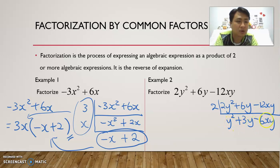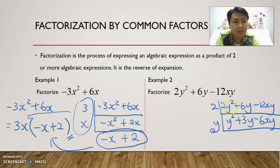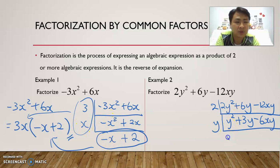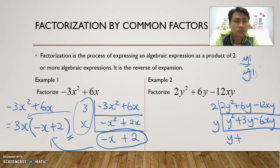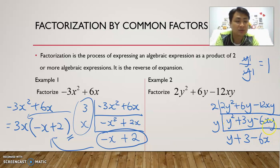We look further — are there any more common factors? We notice there's a y in each term: y squared, 3y, and 6xy. So we continue dividing by y. Y squared divided by y leaves y. 3y divided by y leaves 3. And 6xy divided by y leaves 6x. So after dividing by y we get y plus 3 minus 6x.